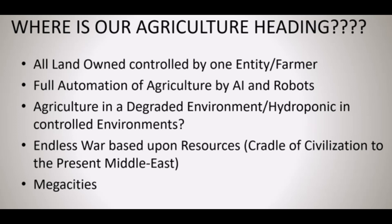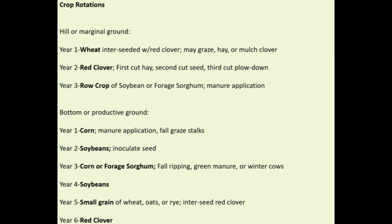Here is my basic crop rotation. On hill ground, marginal ground, or where erosion is a greater concern, I basically have a three-year crop rotation of wheat, red clover, and then a row crop — and that row crop could be forage sorghum or soybeans. On my relatively flat bottom ground I have a six-year rotation: four years of row crop, then a small grain and a red clover. You need to understand that you can tweak these a lot — there is movement within them based on what the weather is doing and what crop prices are — but you need to have a basic crop rotation.